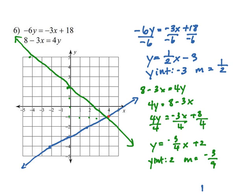So our point of intersection is 4, negative 1. And that's our final answer. Good job.